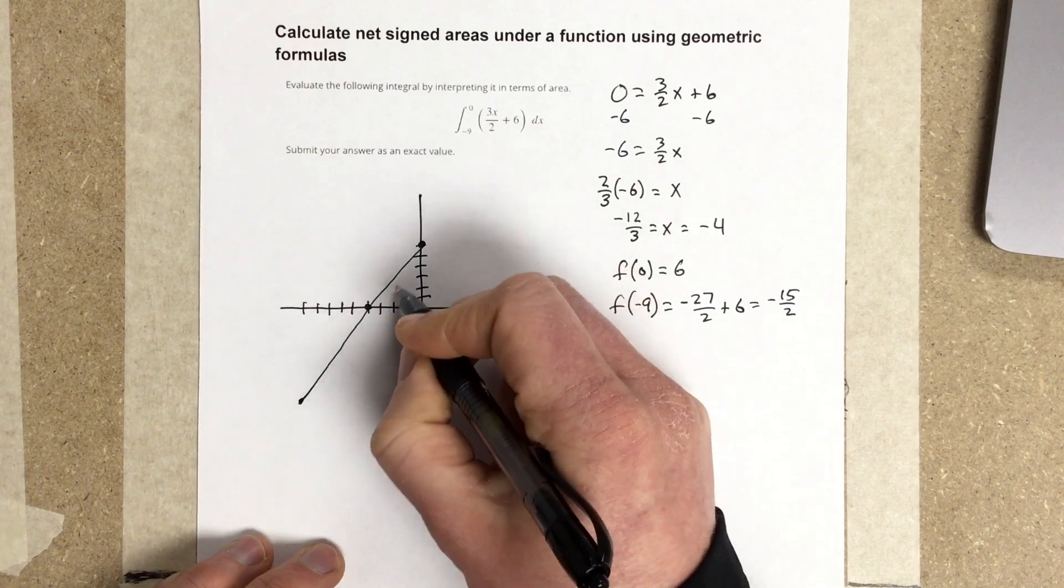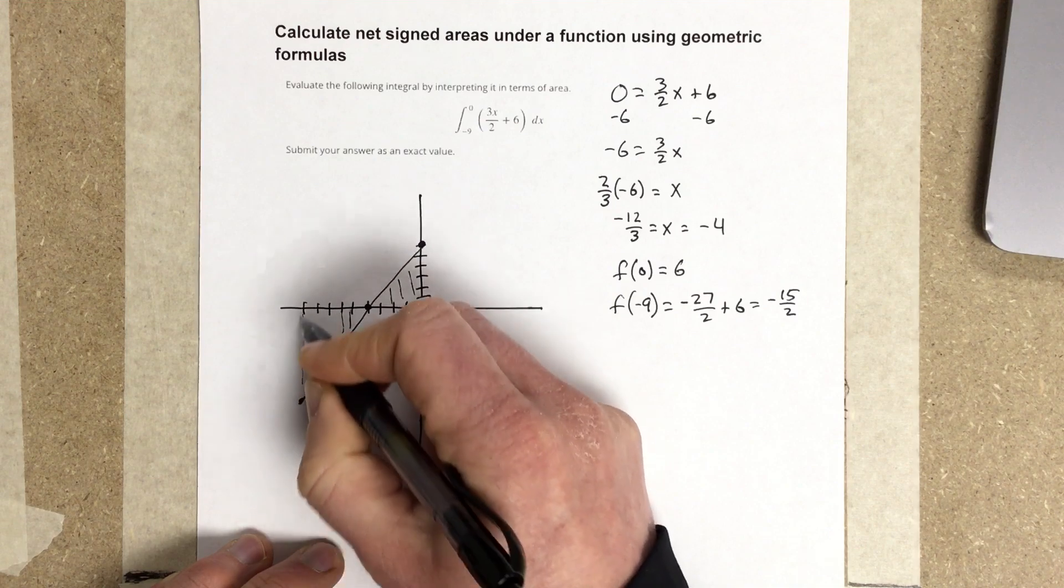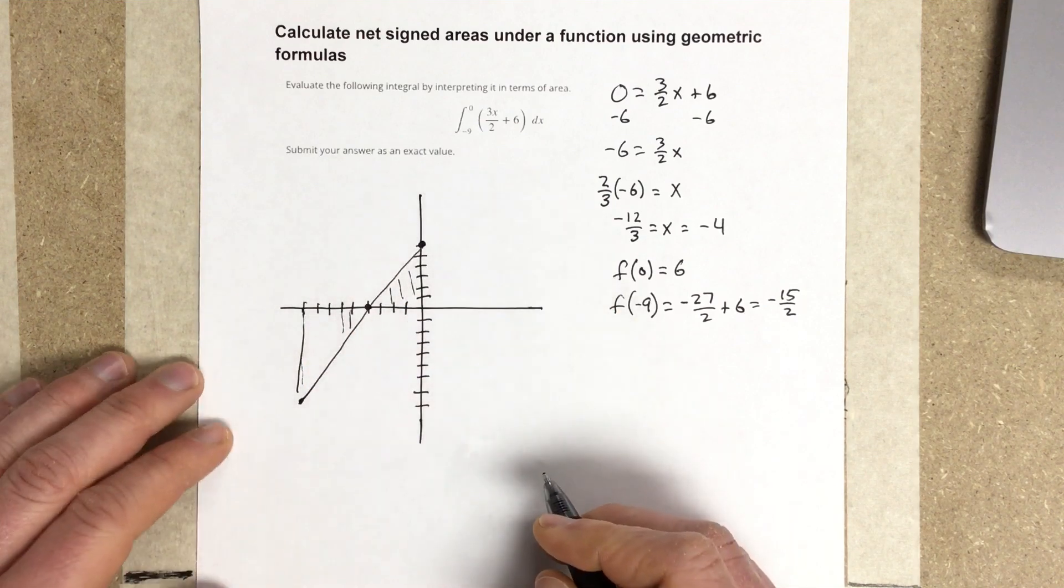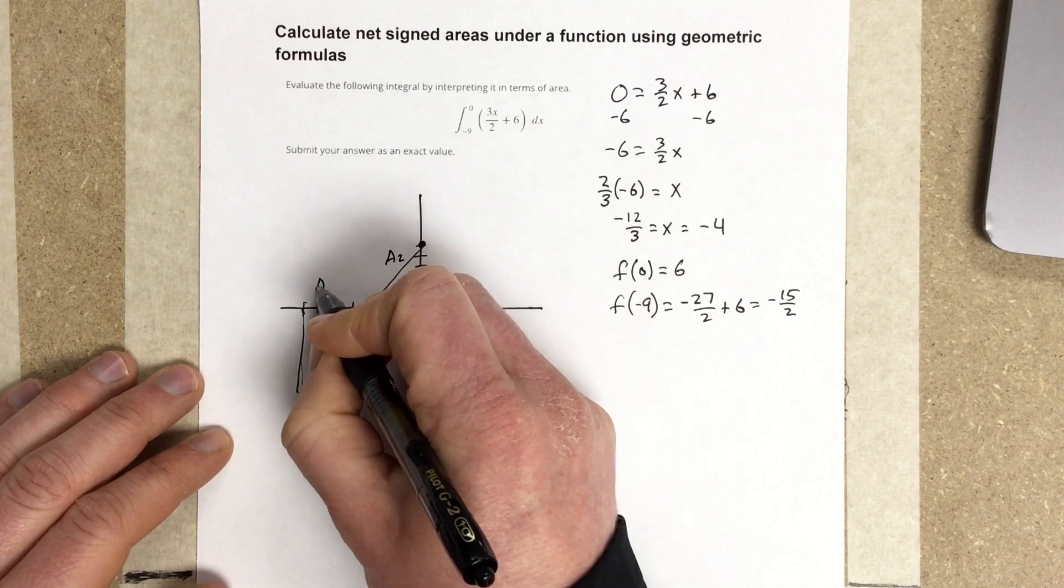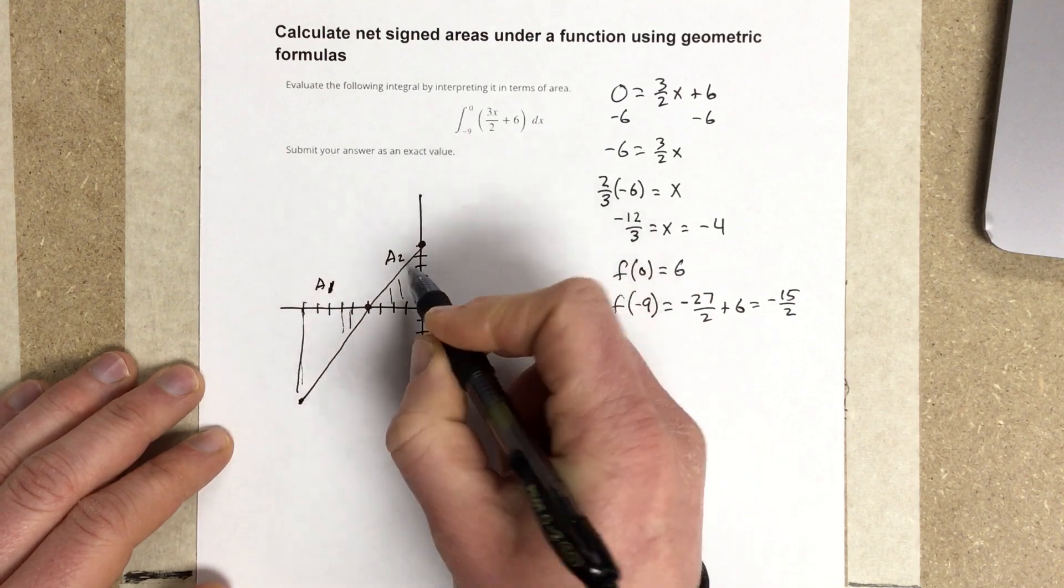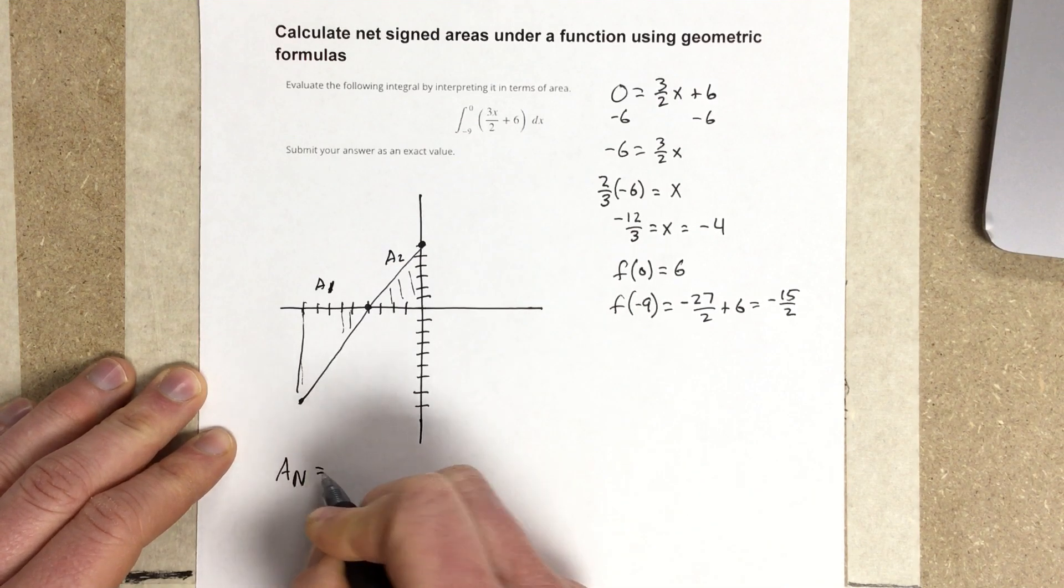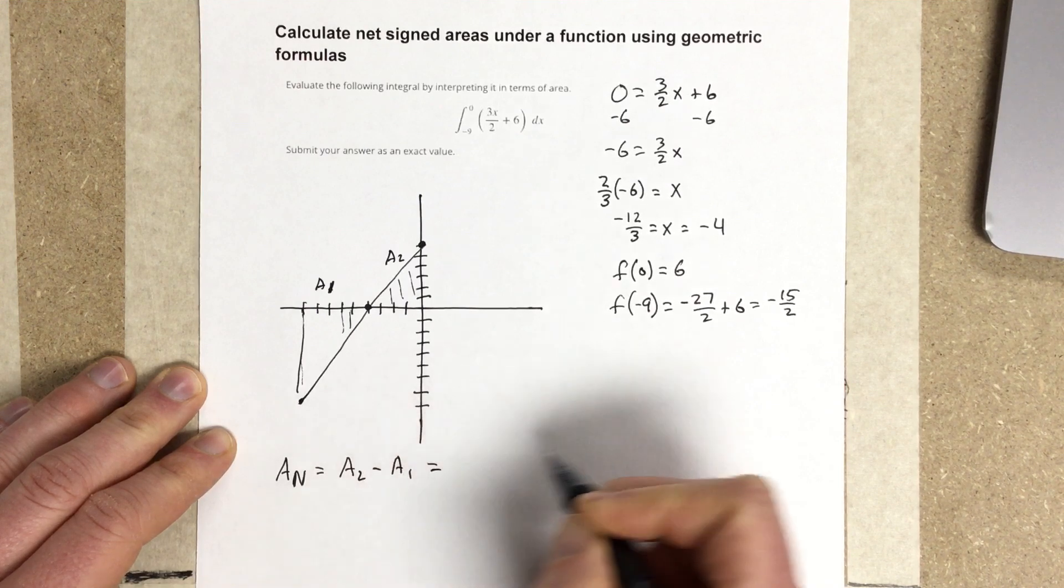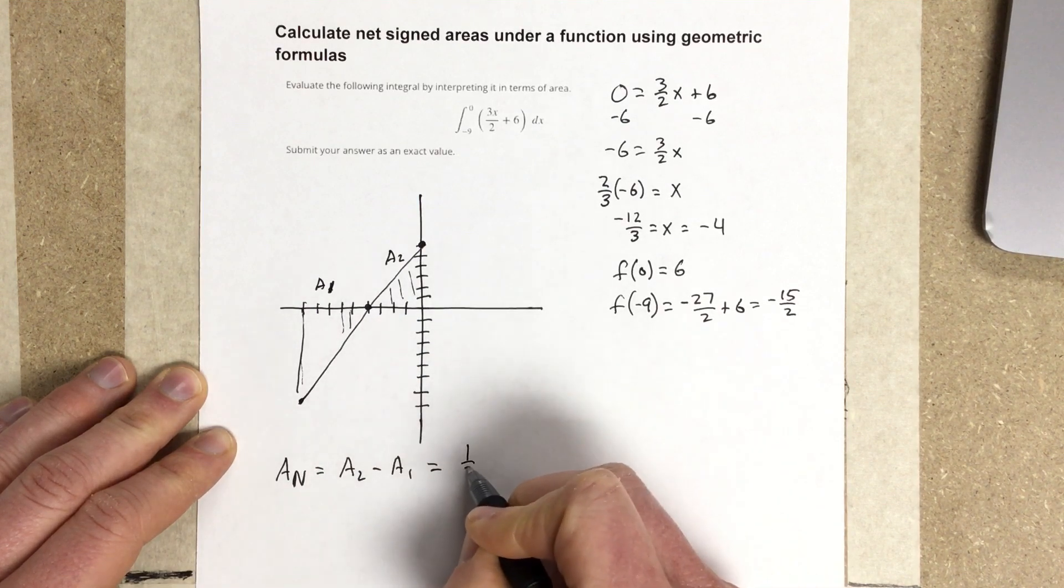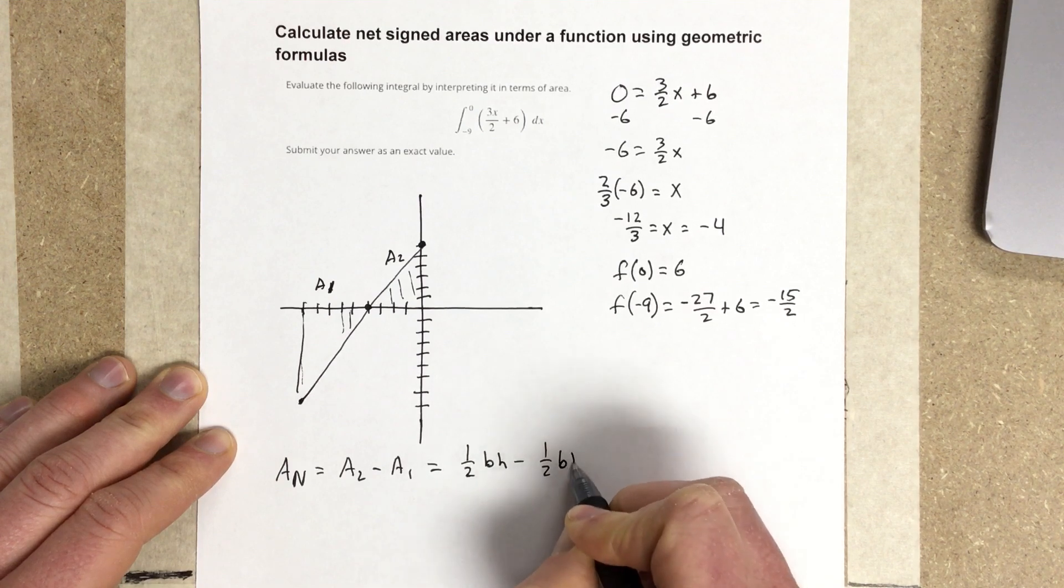So I'm looking for this area in here, and I want to subtract it from this area. So I'm going to say that this is area 2 and this is area 1. Obviously, area 2 is positive, so we're going to say that the area net is going to equal A2 minus A1. And these are both triangles, so we're going to have 1/2 base times height minus 1/2 base times height.